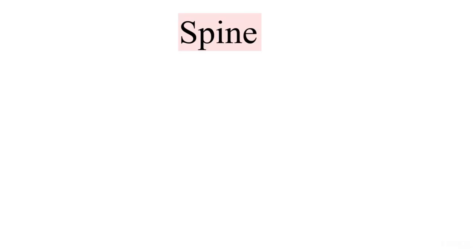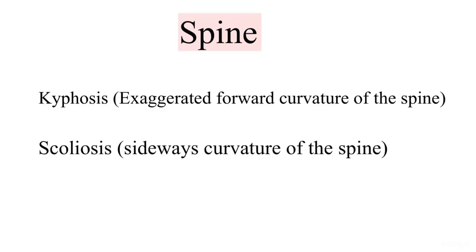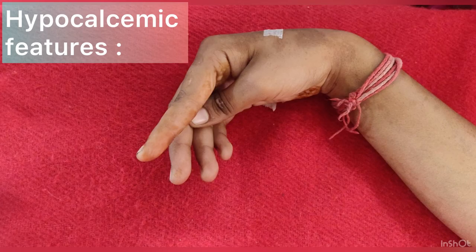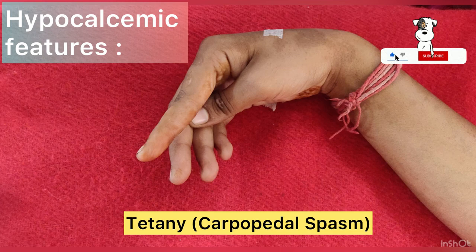The spinal deformities in rickets consist of kyphosis, that is exaggerated forward curvature of the spine, and scoliosis, that is sideways curvature of the spine. The patient can also present with carpopedal spasm due to hypocalcemic tetany.